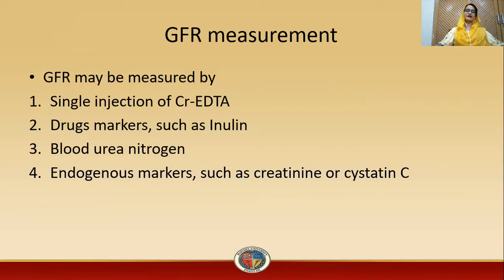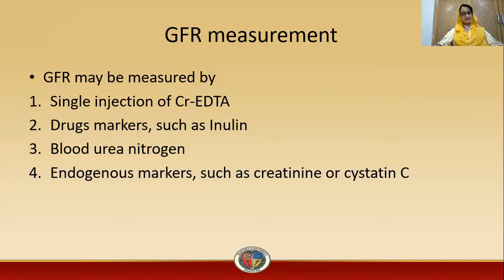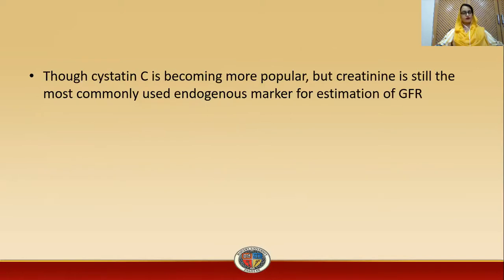Drug markers such as inulin use the same principle as creatinine EDTA. Blood urea nitrogen estimation — how much nitrogenous waste is found in the blood — also gives an estimate of GFR and kidney function efficiency. Endogenous markers such as creatinine and cystatin C are also used; though cystatin C is becoming more popular, creatinine remains the most commonly used endogenous marker for GFR estimation.